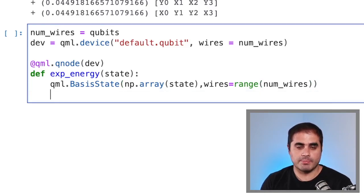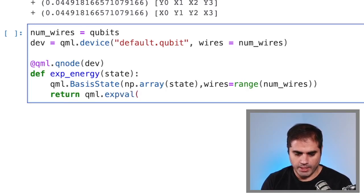And we are going to return the expectation value of the energy, that is the expectation value of the Hamiltonian. So we need to return qml.expval of H.